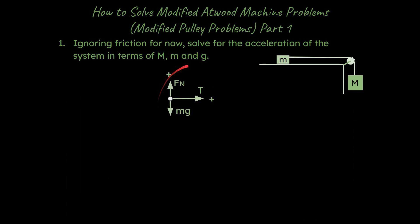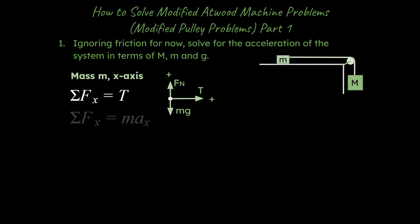First of all, we're going to draw a free body diagram for little m — that's just how we start the problem. Then how I typically start and how I ask students to solve any problem with forces is what I call the sum of the forces strategy. In the x-axis, you're going to add up the forces in the axis you're dealing with. In this case it's the x-axis to begin with, and there's only one force to deal with, so we just list that one out.